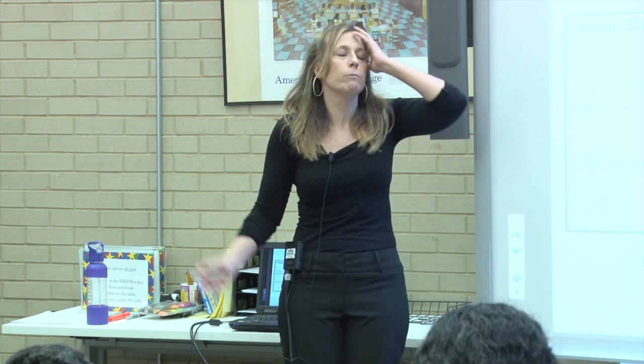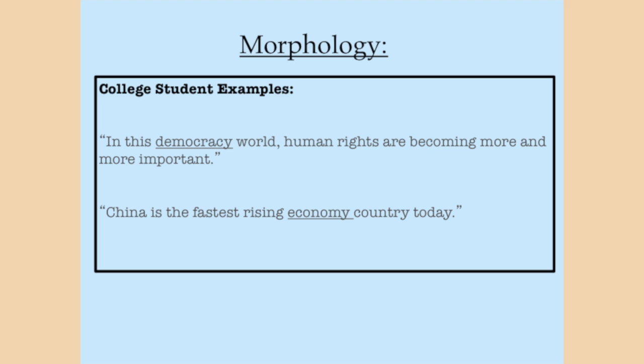So these are college examples. I would do online tutoring for a lot of college students — students trying to display really complex thoughts, which is what you do in college and what we want our GED students to do as well, but they didn't have the vocabulary for it, or didn't have the right forms of it. So one sentence would be: 'In this democracy world, human rights are becoming more and more important.' She was going for something — she knew there was something there. She was looking for 'a democratic world,' but she just didn't have it at her fingertips.